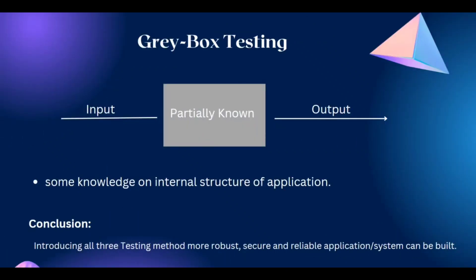This is the third and last one — grey box testing. Once you have an understanding of black box and white box testing, grey box testing is super easy. The tester has partial knowledge about the internal source code, architecture, and data flow of the application. During the SDLC — software development life cycle — we must perform all these testing methods so we can build more robust, secure, and reliable application systems.